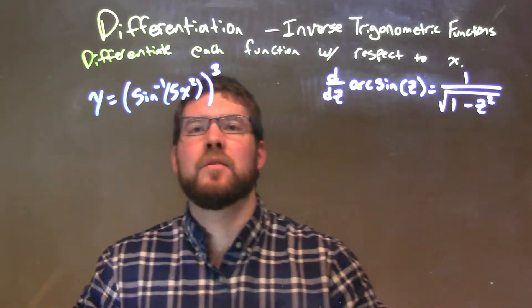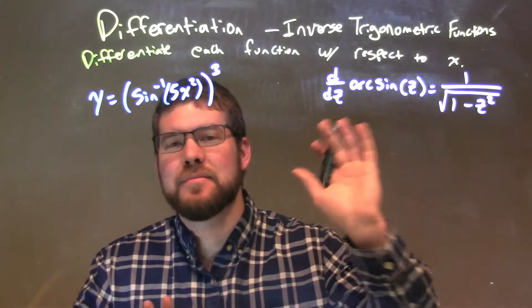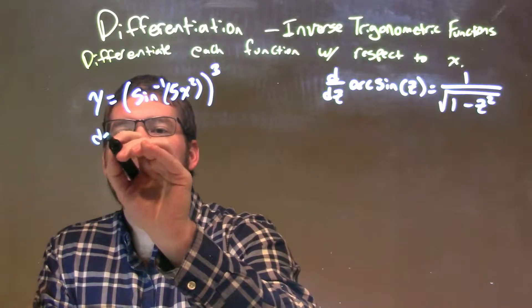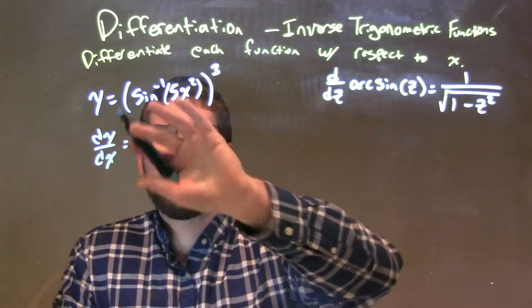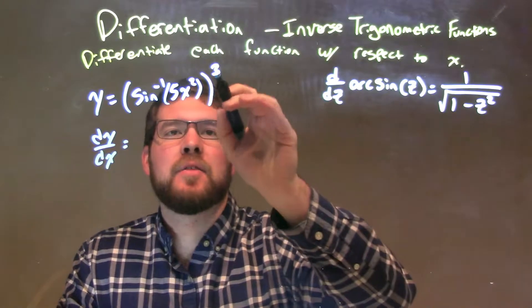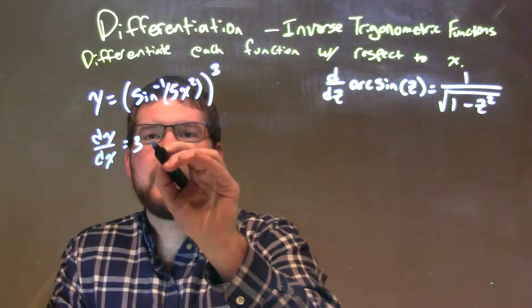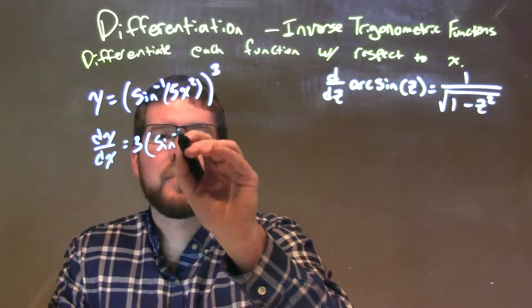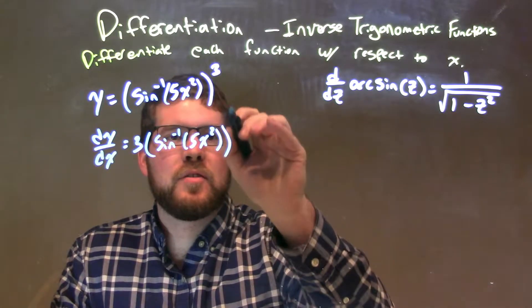When I take the derivative of this, we're going to be basically using the chain rule with our trig rules. So we have dy/dx here, and we notice the most outer shell here is that third power, so we're applying the power rule here. Three times keeps the inside the same, arc sine of 5x squared to the second power.